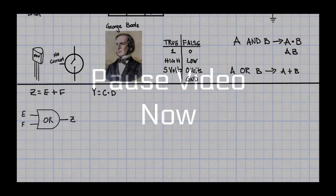When you see the first one, you should think Z equals E or F, and you would draw an OR gate with E and F as the two inputs and Z as the output. The second one reads Y equals C and D. Here is what you should have come up with.